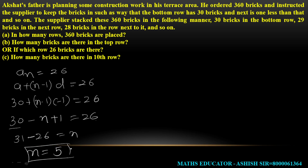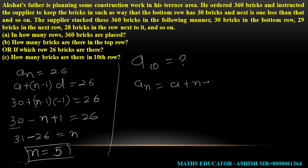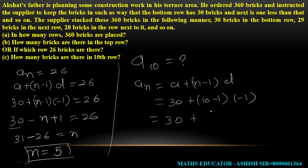How many bricks are in the 10th row? We find a10. Using the formula: a10 = a + (n−1)d = 30 + (10−1)×(−1) = 30 + 9×(−1) = 30 − 9 = 21. So there are 21 bricks in the 10th row.